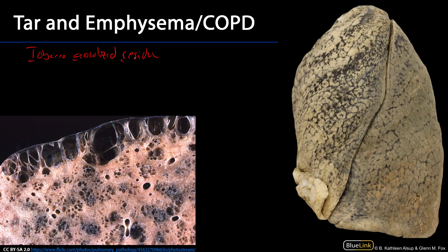This tar can be seen on the surfaces and throughout the lungs of former smokers. We can see regions of the lungs which are stained with tar; even the visceral pleura is stained with tar.